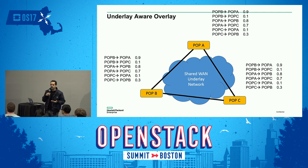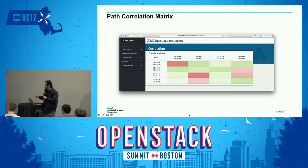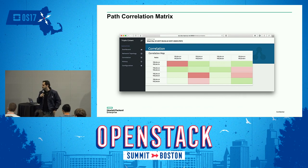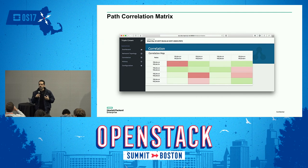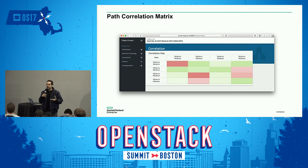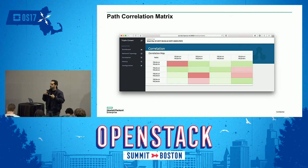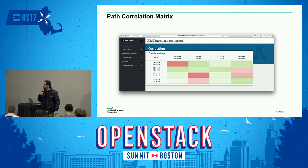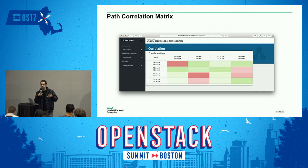All POPs exchange this latency information with each other, and using that information, the POPs compute a correlation matrix — something like what's shown in the UI we've developed. Depending on how much traffic there is in the network, we correlate how much of the underlay is shared between two specific paths.